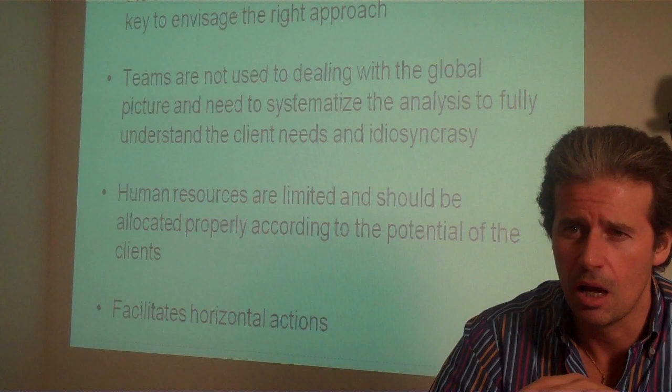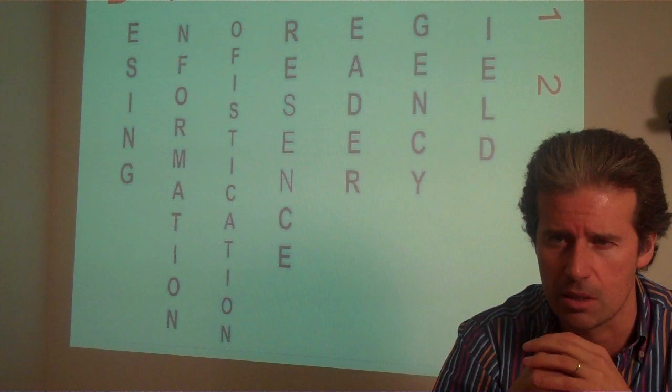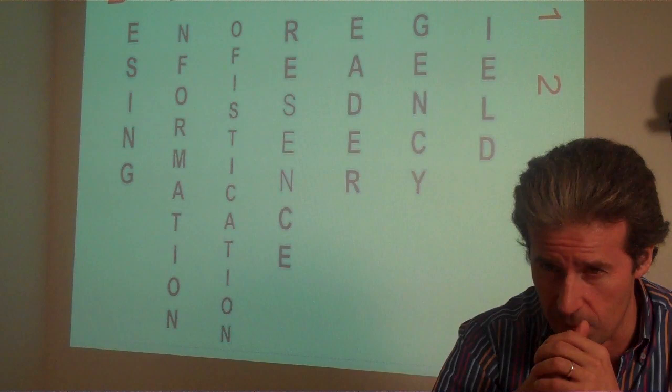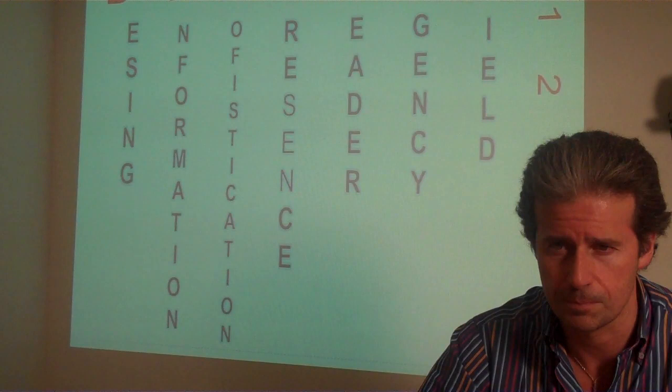With this idea in mind, I designed what I call the DISPLAY graph, which stands for the following: D for Design, I for Information, S for Sophistication, P for Presence, L for Leader, E for Agency, and Y for Yield. That makes up a matrix in which each of these elements is measured from 1 to 5. Let's go now to analyze each of these elements.